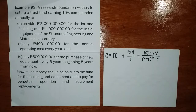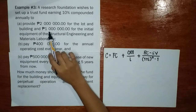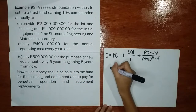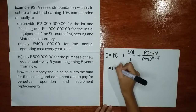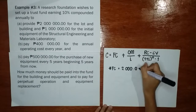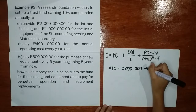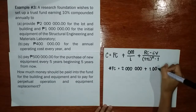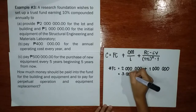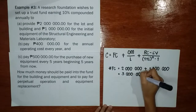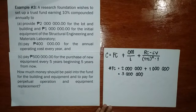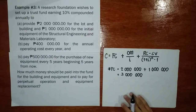For the first cost, we have 2 million and 1 million. So, combining these two together, we write it here. We have 3 million for our first cost, because these two are the initial expenses to start the project.